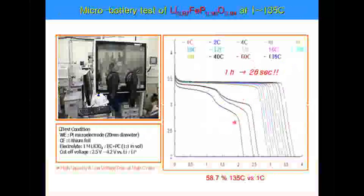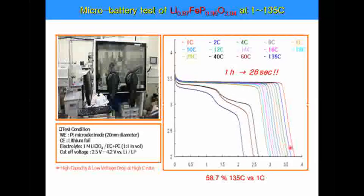One of the main advantages of LFP is retention stability. When we increase the charge-discharge rate from 1C to 135C, we can see the cell is still alive. This is surprising because, although we retain only 50% of capacity, we can still achieve 50% capacity when charging for only 26 seconds.